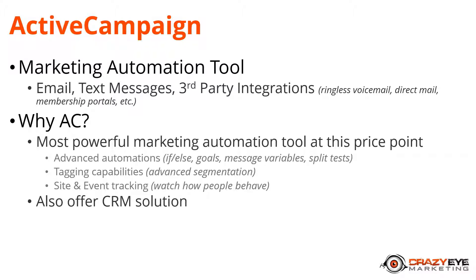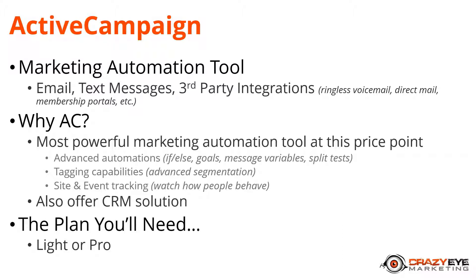If your business is hands-on with clients and customers, the ActiveCampaign CRM solution could be really useful, and there's a module on it in the course. For plans, I typically recommend starting with the Lite plan, which includes about 90% of the features except the CRM solution. Pretty much everything in this course beyond the CRM can be achieved with the Lite plan. If you want the CRM solution, you'll need to upgrade to the Plus plan, which is a bit more expensive.